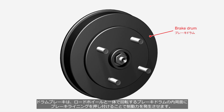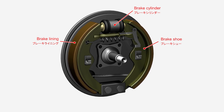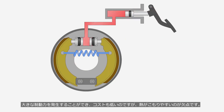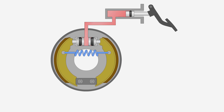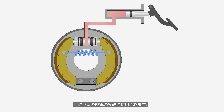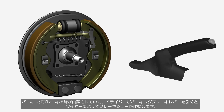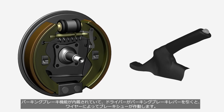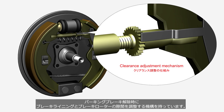A drum brake generates braking force by pressing the brake shoes and brake linings against the inner surface of the brake drum, which rotates together with the road wheel. It can generate a large braking force and is cost-effective, but its drawback is that it tends to retain heat. It is mainly used on the rear wheels of small front-engine, front-wheel-drive vehicles. It has an integrated parking brake function. When the driver pulls the parking brake lever, the brake shoes are actuated through a parking brake cable. It has a mechanism to adjust the clearance between the brake lining and the brake drum when the parking brake is released.